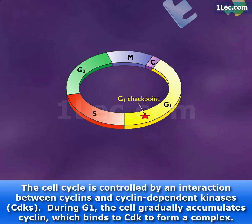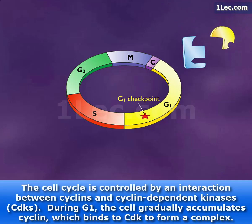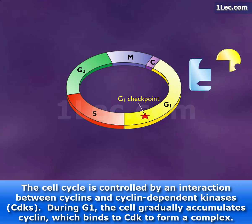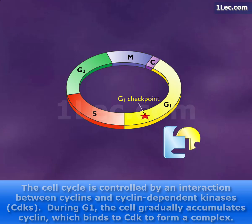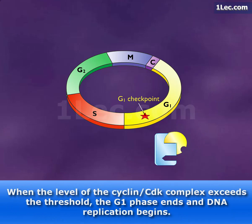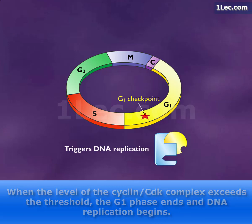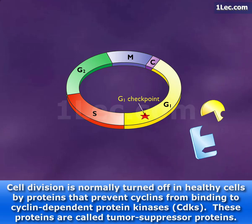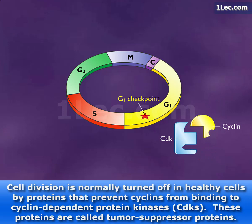The cell cycle is controlled by an interaction between cyclins and cyclin-dependent kinases. During G1, the cell gradually accumulates cyclin, which binds to CDK to form a complex. When the level of the cyclin-CDK complex exceeds the threshold, the G1 phase ends and DNA replication begins. Cell division is normally turned off in healthy cells by proteins that prevent cyclins from binding to cyclin-dependent protein kinases.